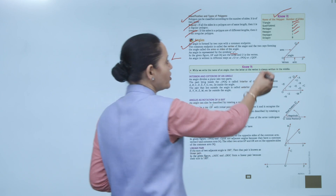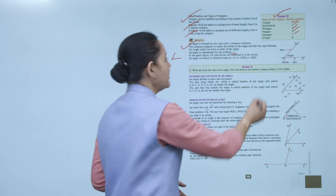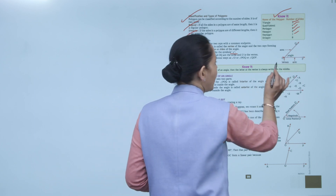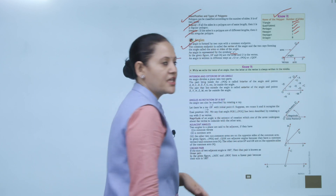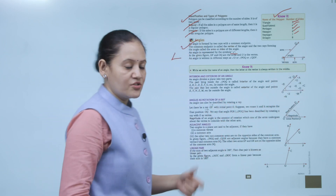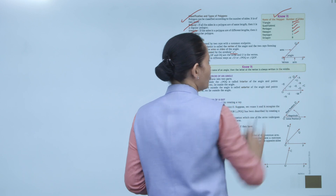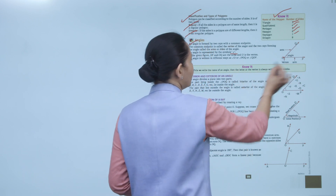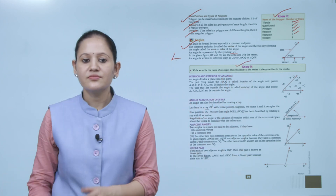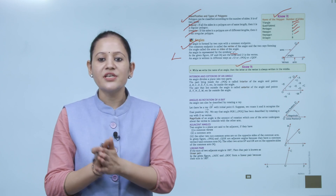OQ and OP form this angle, their common endpoint O is the vertex, and OQ and OP are the arms. We can name the angle QOP or POQ or simply ∠O. Note: when writing the name of an angle, the letter at the vertex is always written in the middle.